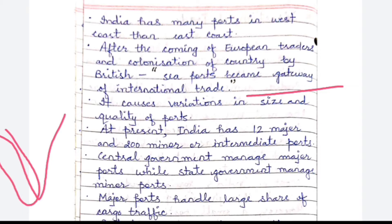When European traders and the British took control of India, the seaports were made gateways for international trade. All international trade from India passed only through these ports. This caused variations in the size and quality of ports — some ports developed more with heavy cargo traffic, while others handle normal import-export. At present, India has 12 major and 200 minor and intermediate ports.